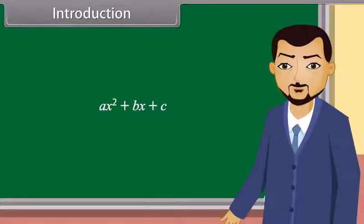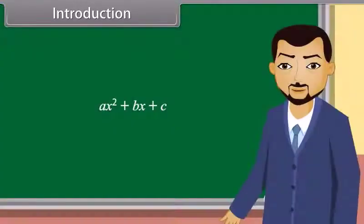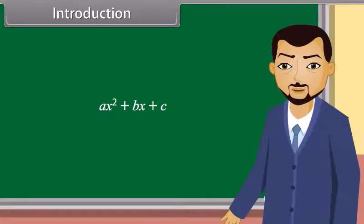Can you tell which type of polynomial is this? It is a quadratic polynomial. Correct. This is a quadratic polynomial. When we equate this polynomial to zero, we get a quadratic equation. Today we will learn about quadratic equations.